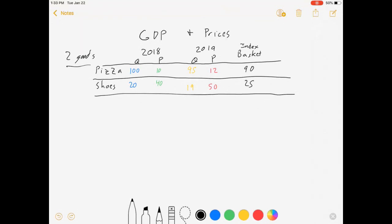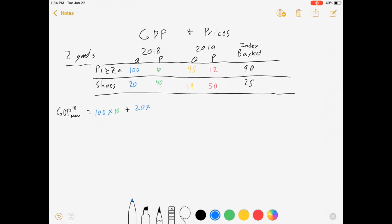So let's get to it. We'll start out by calculating the nominal GDP in 2018. I'm gonna multiply quantities by prices in that year, so I sold 100 pizzas at $10 each plus 20 shoes at $40 each, which means our nominal GDP is $1800. We sold $1,800 of goods and services in 2018.